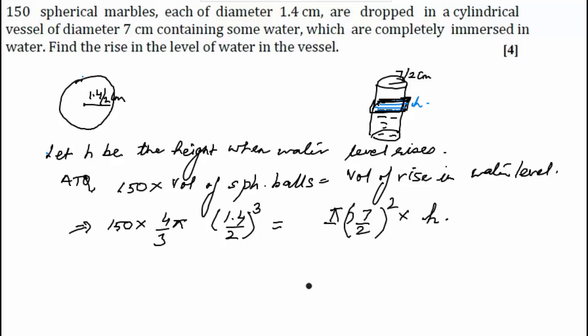Cancelling pi, this is equal to pi r squared h. We can solve for h, and solving for h will give the value of h.